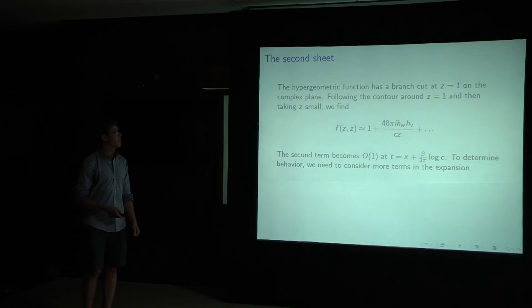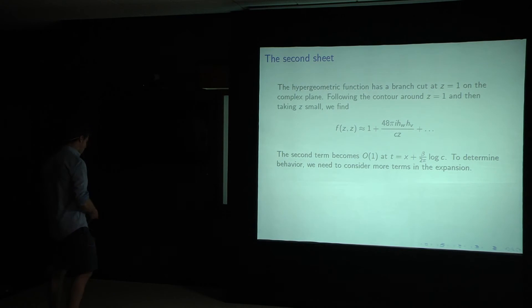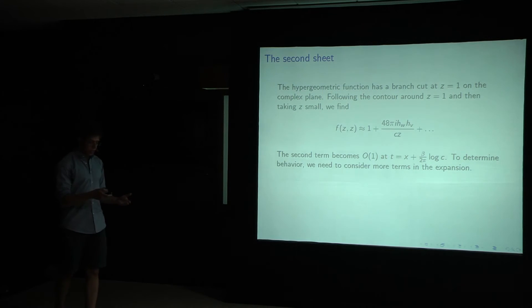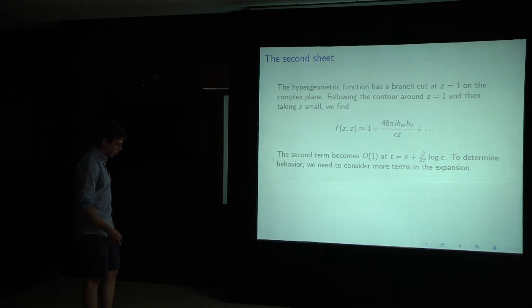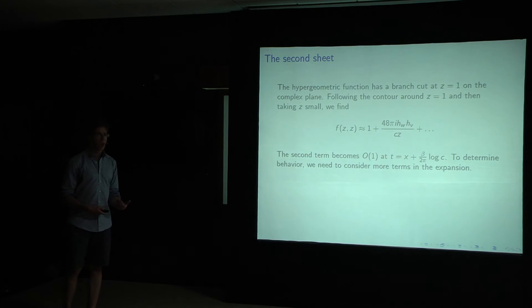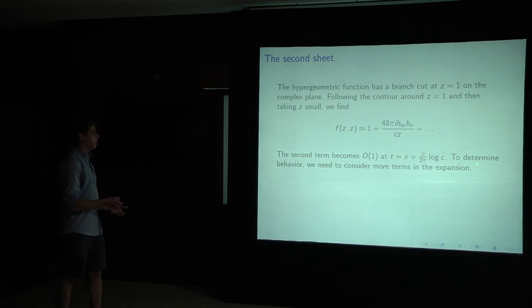However, there's also a second sheet. So following the correlation, and the hypergeometric function has a branch cut running from one to infinity, as expected. So following the contour around z equals one, and then taking z small. Instead, we find a huge effect. So the second term is becoming order one at a time t equal to the distance plus this constant.